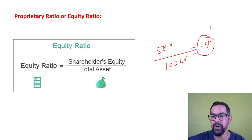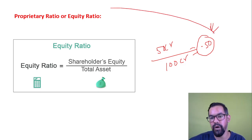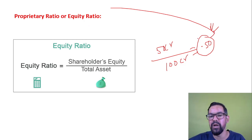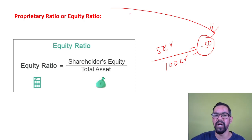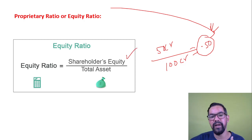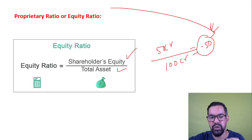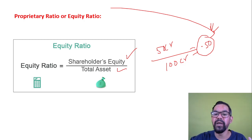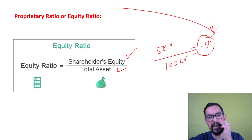Let's say shareholders' equity is 50 crore rupees and total assets are 100 crore rupees. So 50 divided by 100 gives 0.50 — that is the proprietary ratio or equity ratio for that organization. To make this more complex, examiners give you multiple shareholders and different asset entries; you sum all of them to identify total shareholders' equity and total assets, then calculate the equity ratio. Shareholders' equity of 50 crore divided by total assets of 100 crore gives a ratio of 0.50.